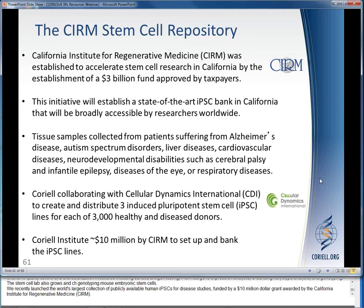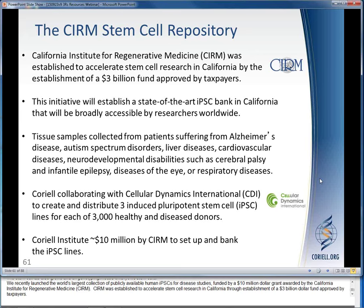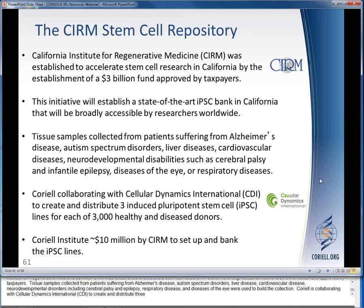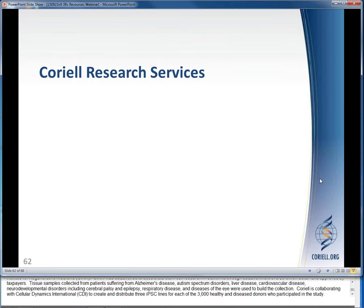CIRM was established to accelerate stem cell research in California through establishment of a $3 billion fund approved by taxpayers. Tissue samples collected from patients suffering from Alzheimer's disease, autism spectrum disorders, liver disease, cardiovascular disease, neurodevelopmental disorders including cerebral palsy and epilepsy, respiratory disease, and diseases of the eye were used to build the collection. Coriell is collaborating with Cellular Dynamics International to create and distribute three iPSC lines for each of the 3,000 healthy and diseased donors who participated in the study.